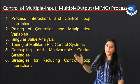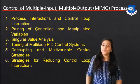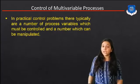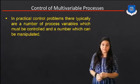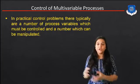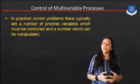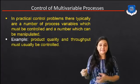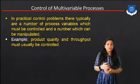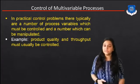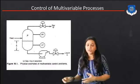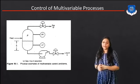So there are multiple points to study in this chapter. First of all, we know about what is the MIMO process — Control of Multivariable Process. In practical control problems, there are typically a number of process variables which must be controlled and a number which can be manipulated. For example, product quality and throughput must usually be controlled. A physical example of the multivariable control problem is a gas-liquid separator system.